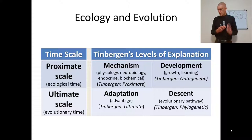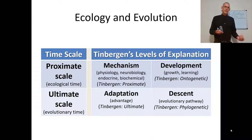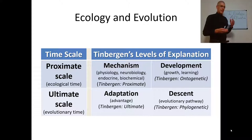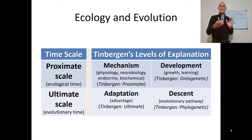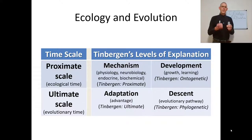We're going to cover Tinbergen's four levels more in depth in a different lecture. There's a proximate scale, which we call ecological time, and then there's the ultimate scale, which we call evolutionary time. If we're looking at interactions between organisms and their environment, that's going to be on a proximate scale. If we're looking at interactions between organisms as they evolve and change in a dynamic system, that's your evolutionary time scale — things like adaptation or descent. What advantage does an organism gain in terms of fitness? How does this organism's ancestors' physiology play into its physiology? That's descent. We're going to be looking at ecological time for most of this course, where we deal with mechanisms, organismal biology, development, learning, and behavioral biology.